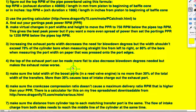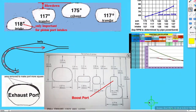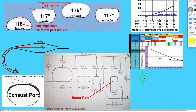When it comes to the boost port, the magic number is 30%. The width of the boost port should be 30% of the total width of the transfers — that's this width plus this width on the other side, add those two together, multiply by two, then multiply by 0.3 to get the boost width. This only comes into play when people are highly modifying their engines. Some think their boost width isn't enough, go over 30%, and realize it was enough — so hold to the 30% rule.